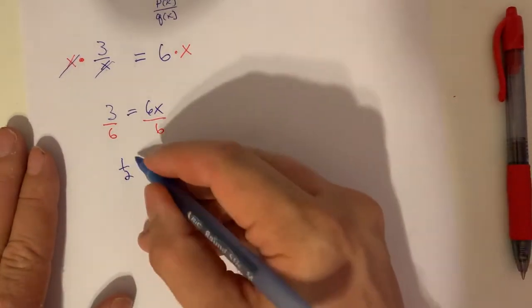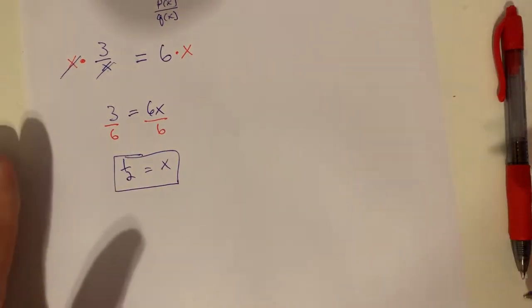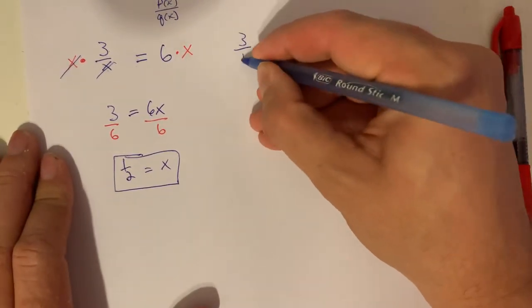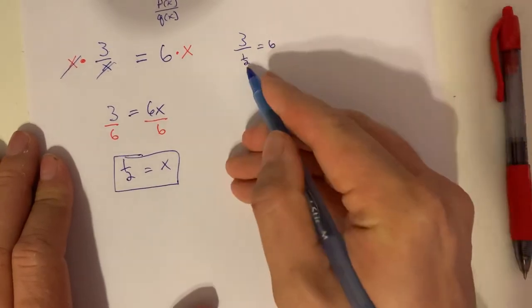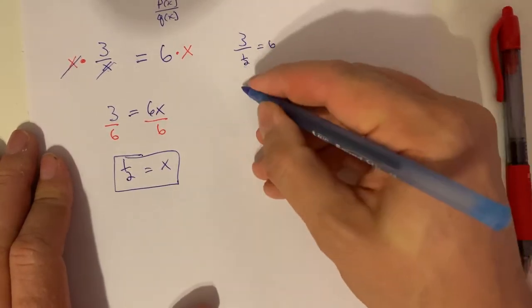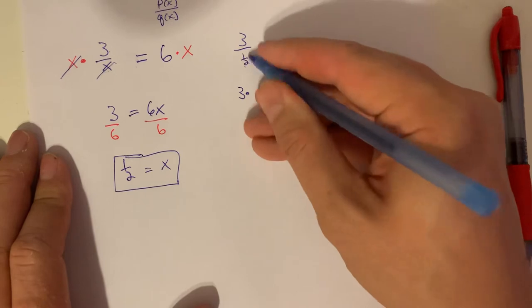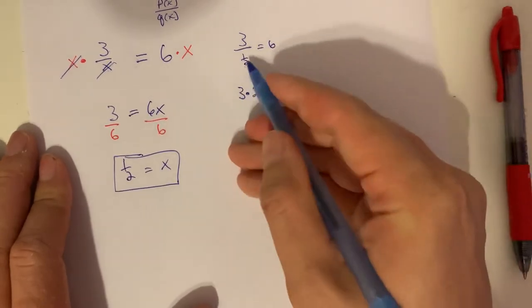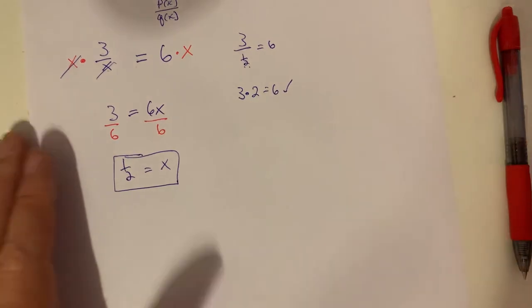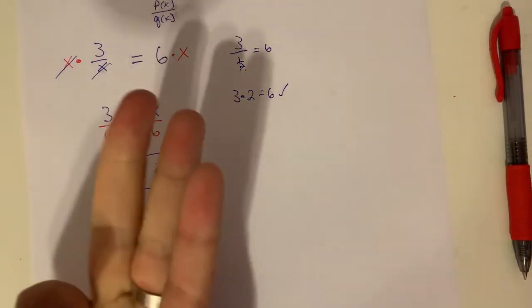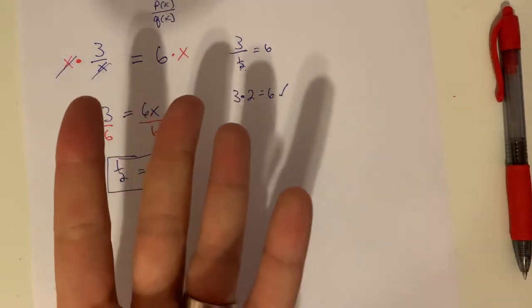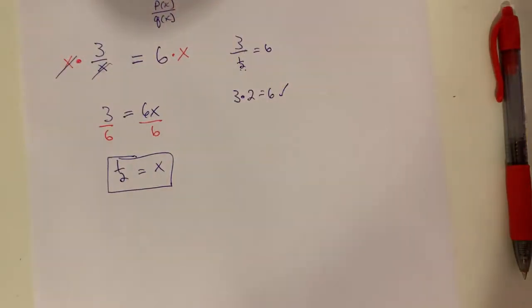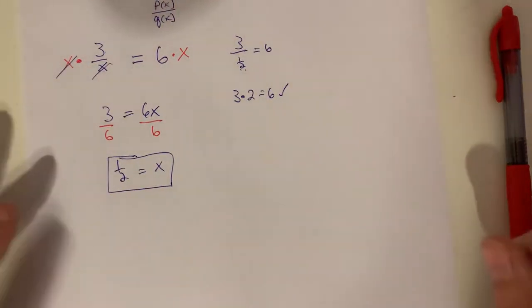We can go back and check: 3 divided by one half is 6. To divide by a fraction, we multiply by the reciprocal, so 3 divided by one half is the same as 3 times 2, which is correct. A half goes into 3 six times, since 6 halves make 3.